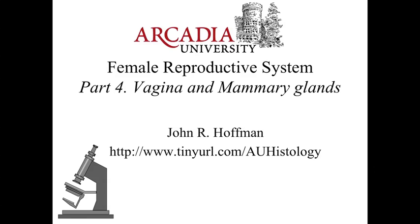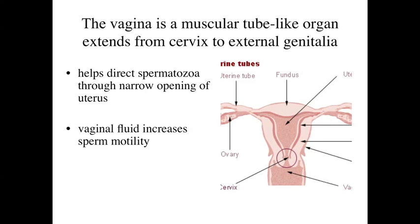Hello, and welcome to part four of our lecture series on the female reproductive system. In part four, the last of the series, we're going to take a look at the vagina as well as the mammary glands. We just finished up with our discussion of the uterus. The final structure is going to be the vagina associated with the female reproductive tract.